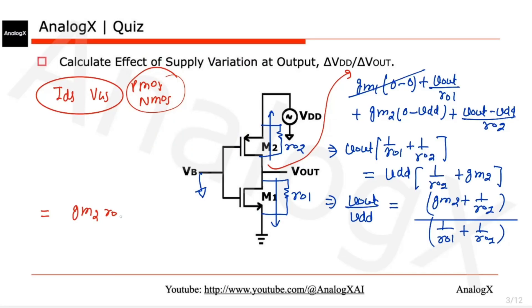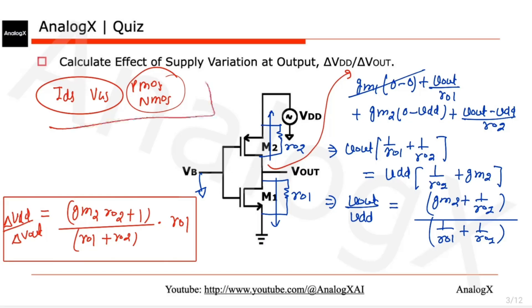(gm2·ro2 + 1) by (ro1 + ro2) times ro1. This is our final answer. Follow this convention and you won't get confused. Thank you, bye.